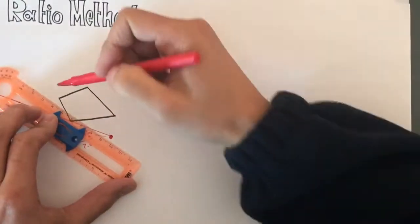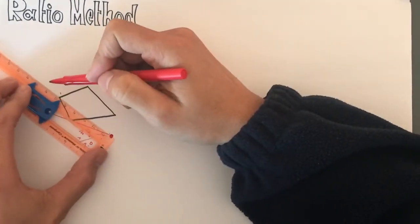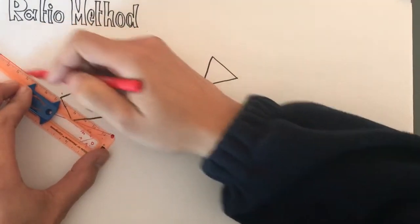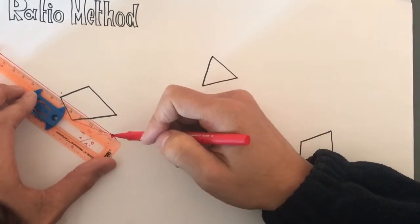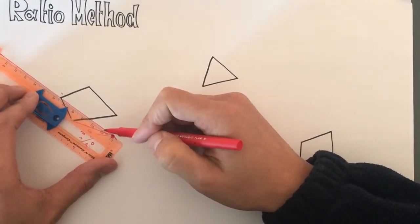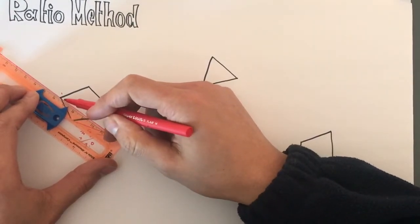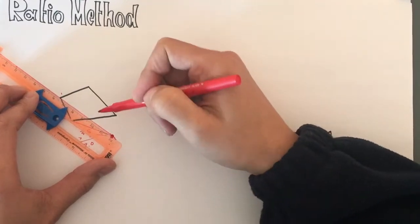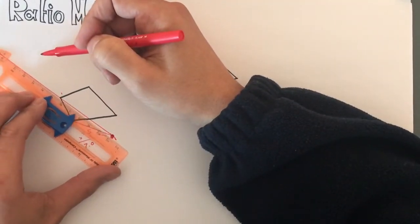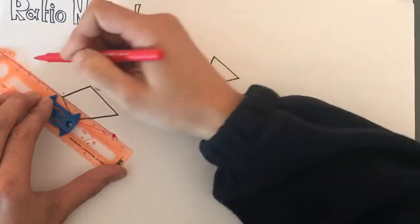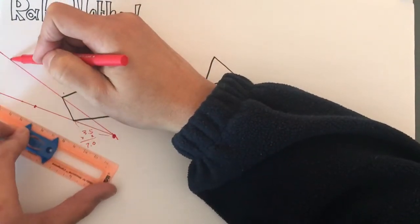And then you do that for the other vertex like that. Measure from here to here. It's 1, 2, 3, 4, 5, and a 5. So times two is going to be 11. So it's going to be 11. And then pick the point.